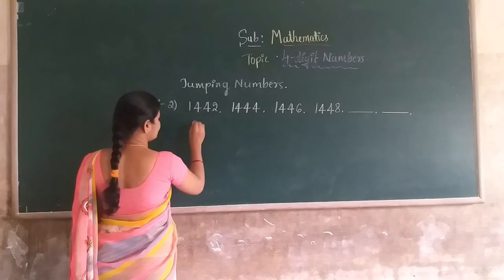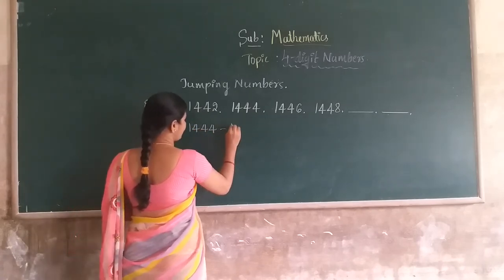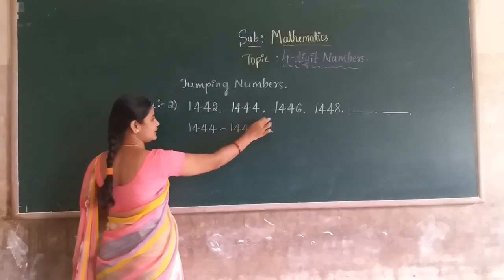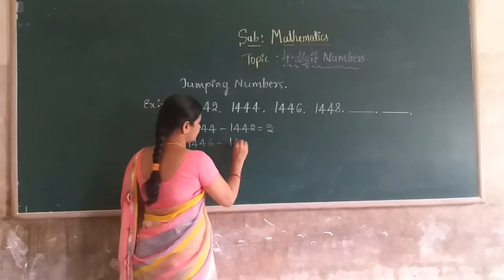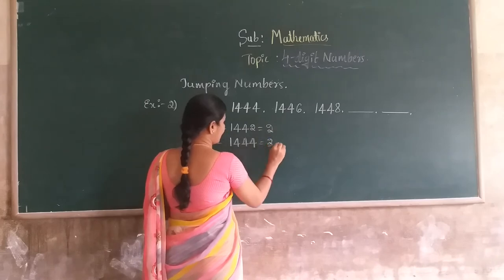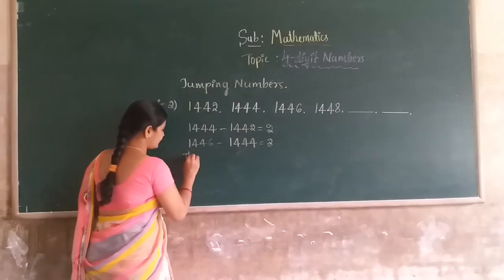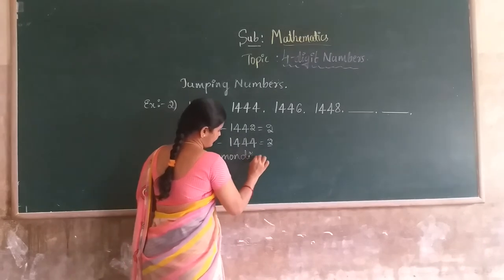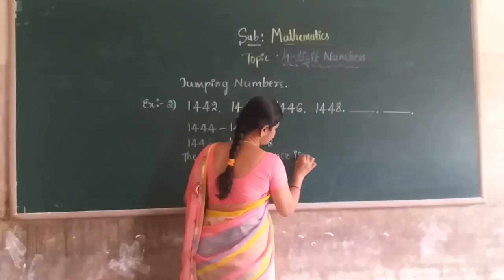First, subtract: 1,444 minus 1,442 gives you 2. And also, 1,446 minus 1,444 gives you 2. Both pairs have the same difference of 2. This is the common difference — the common difference is 2.